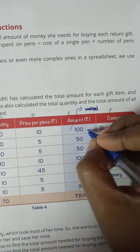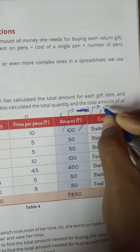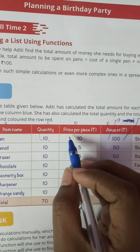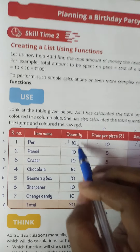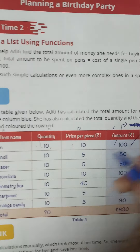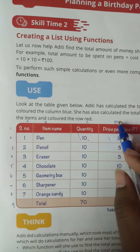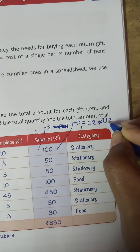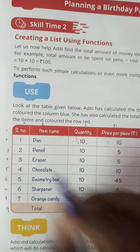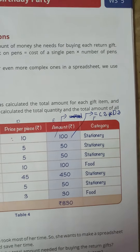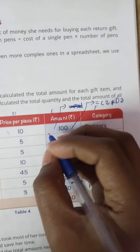We can use the function here. I need to enter equal to, and I need to multiply these two: quantity column C2, and the next one is price column D2. So the formula is =C2*D2. Once you enter this, you need to press the Enter button and the amount will apply.